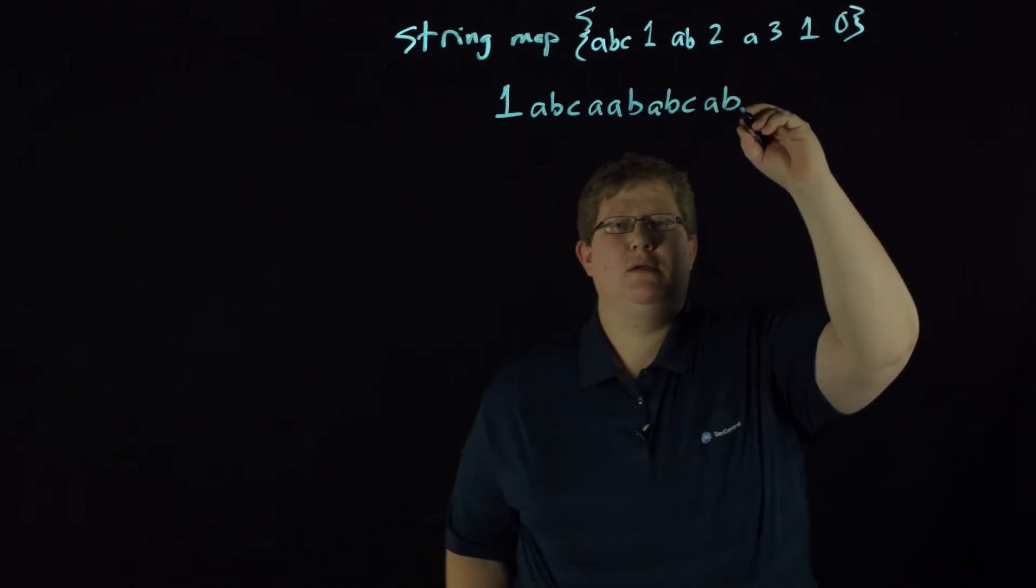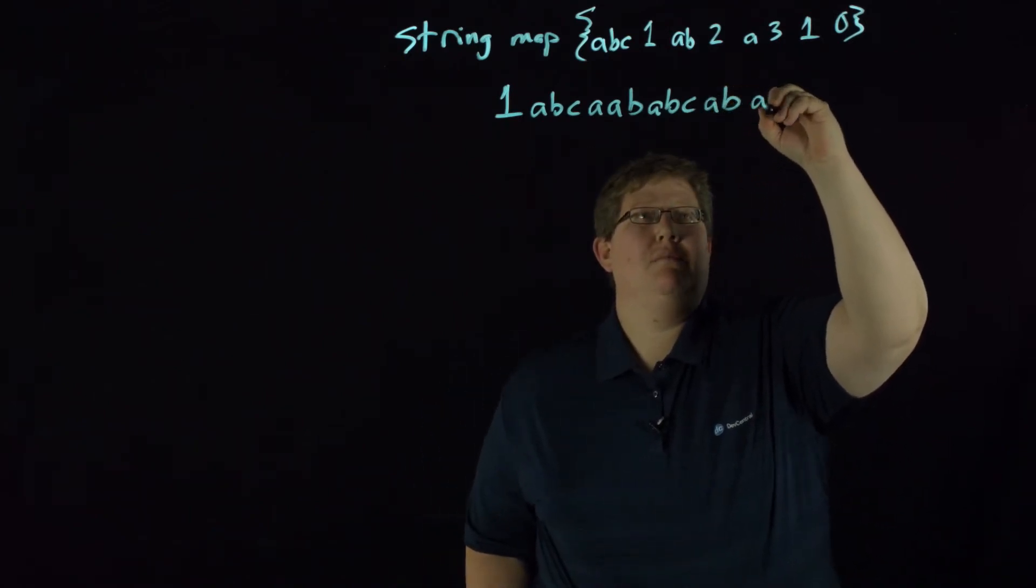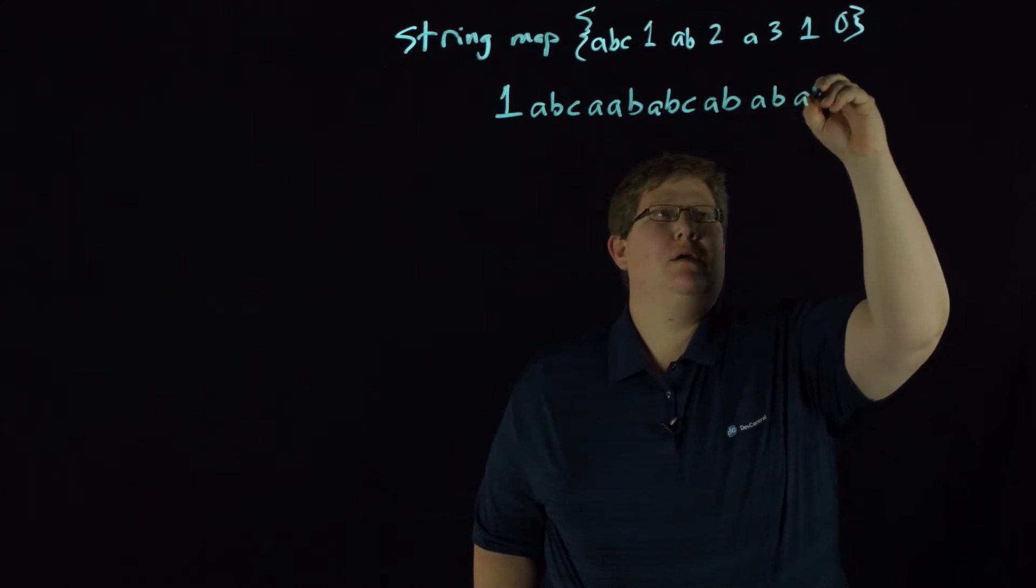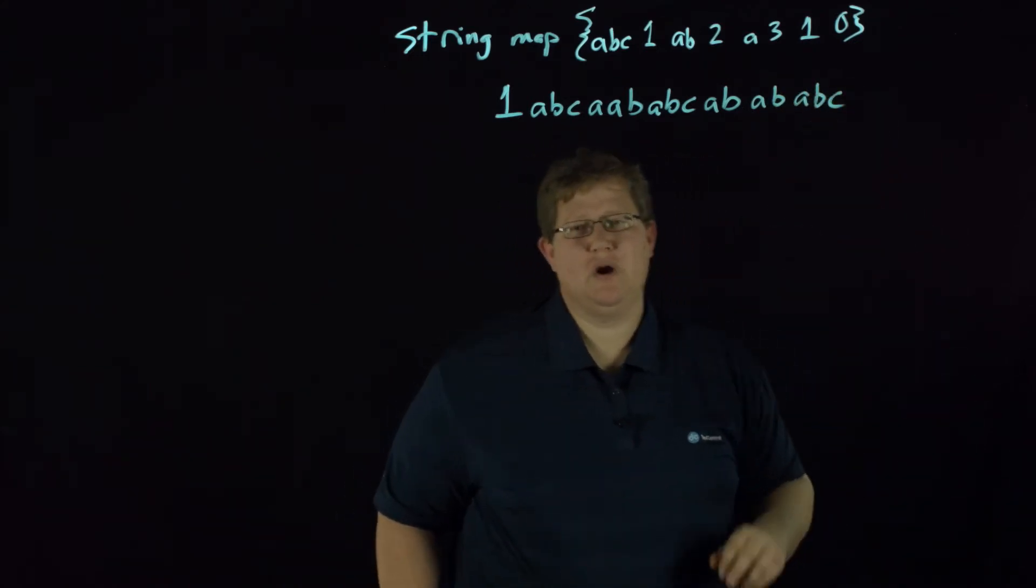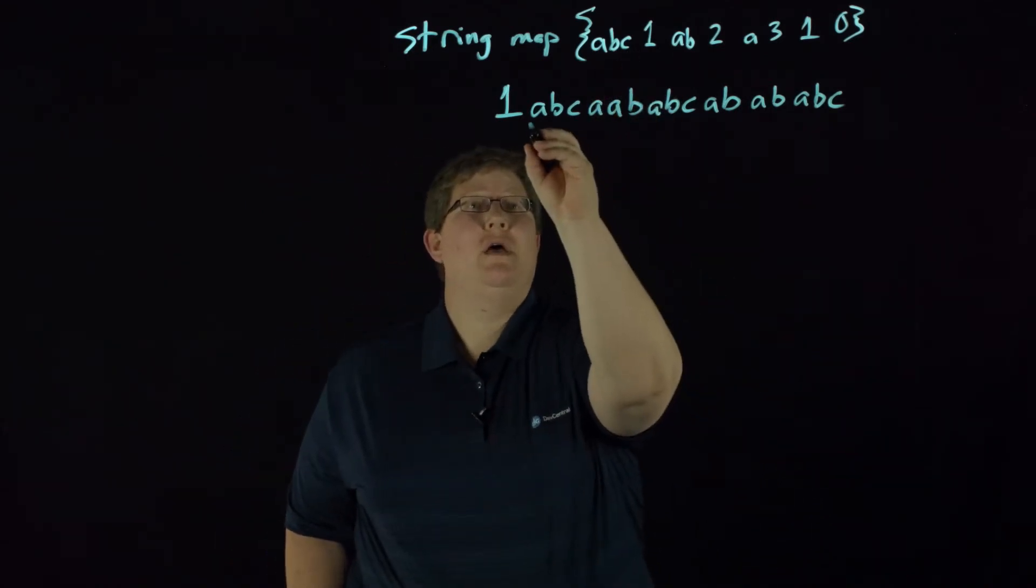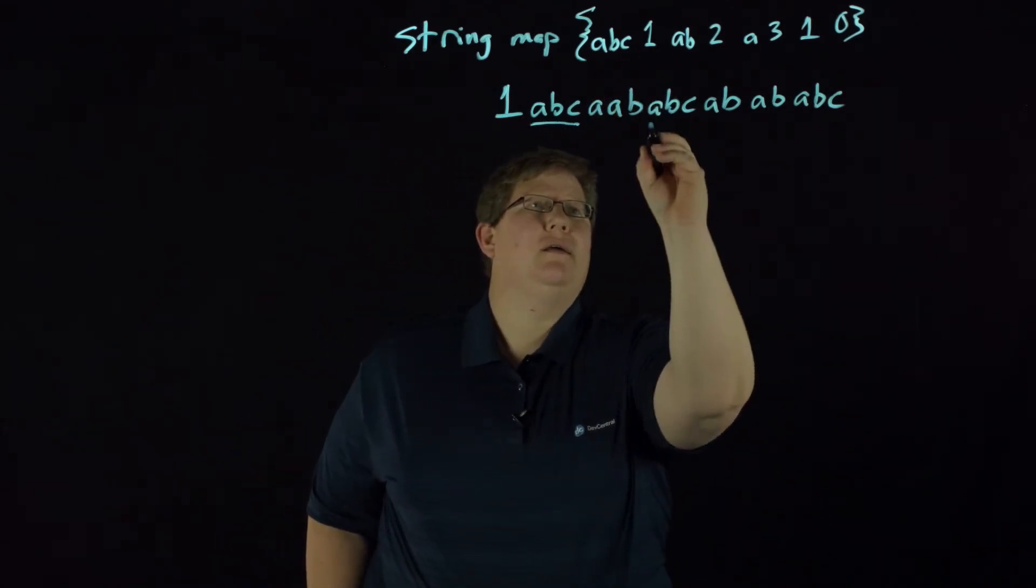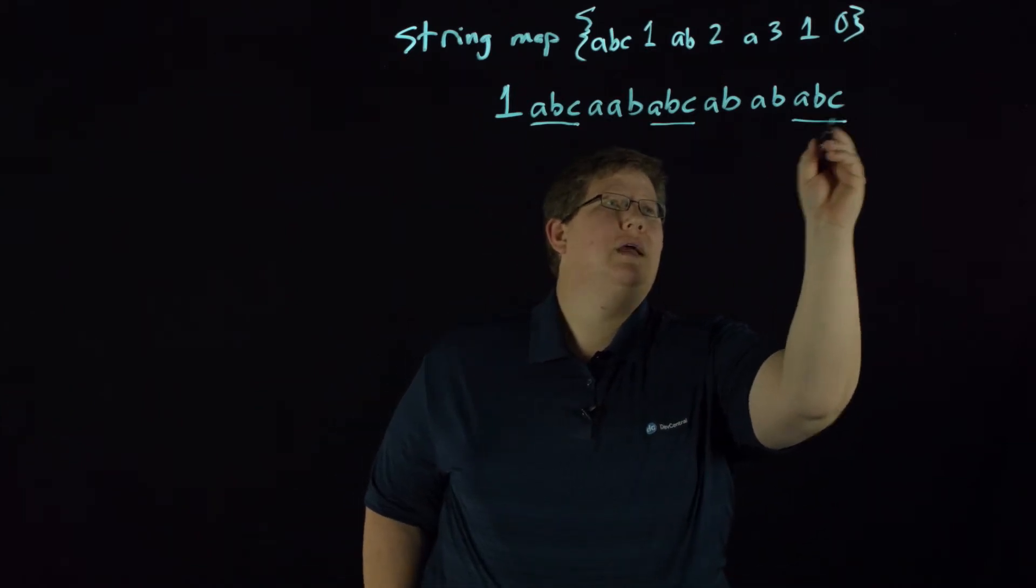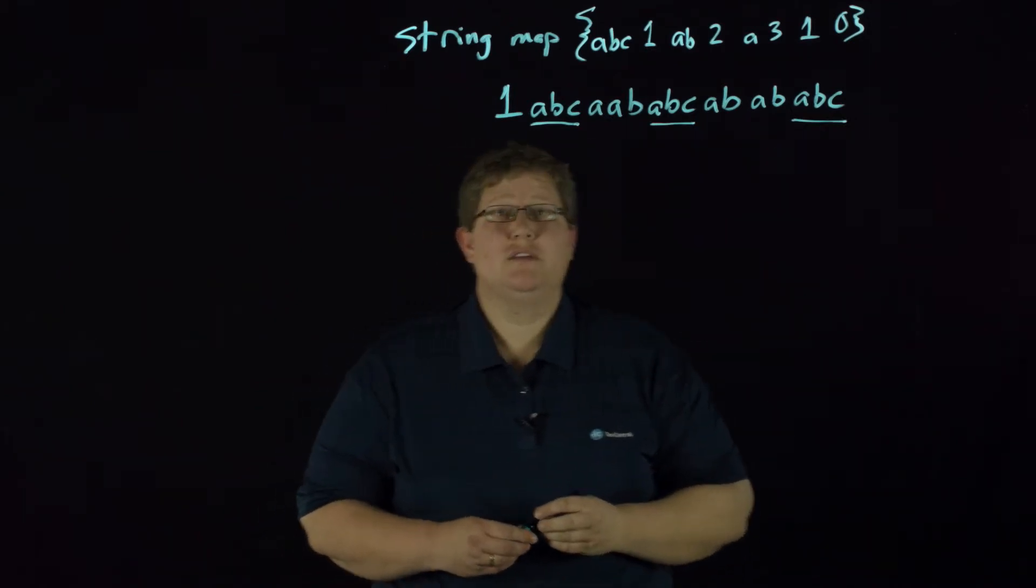ABC AB AB and then ABC. All right, so we'll take this one by one. The first one we're going to map ABC, so we know that we match that there and here and here.